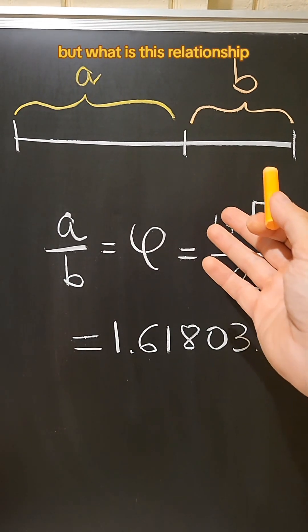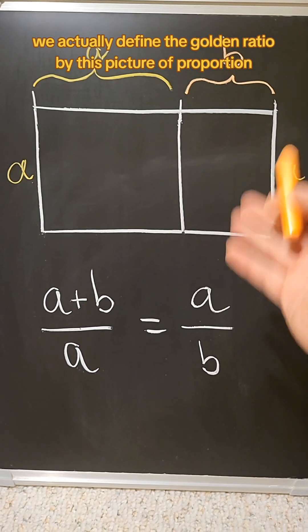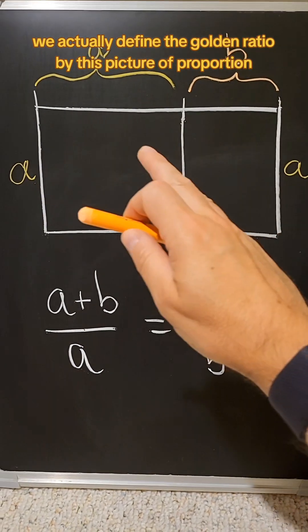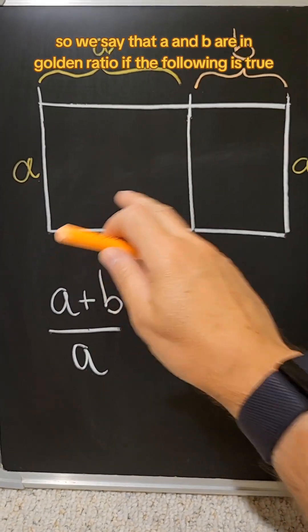But what is this relationship? What does it entail? We actually define the golden ratio by this picture of proportions. So we say that A and B are in golden ratio if the following is true.